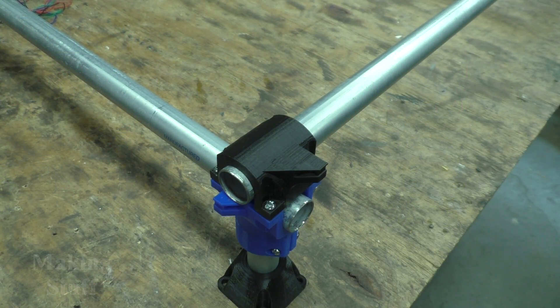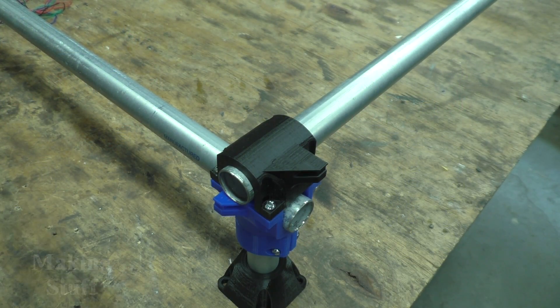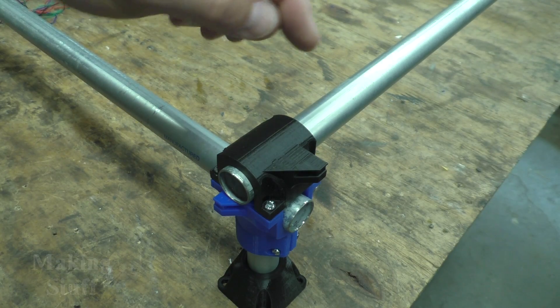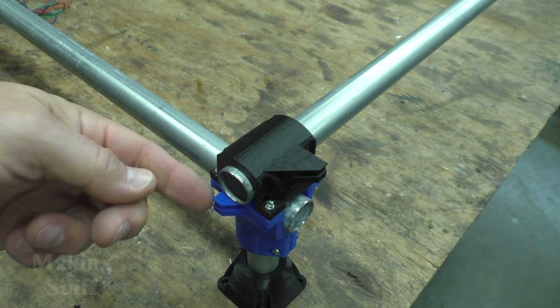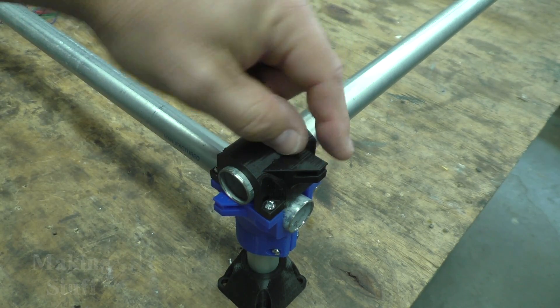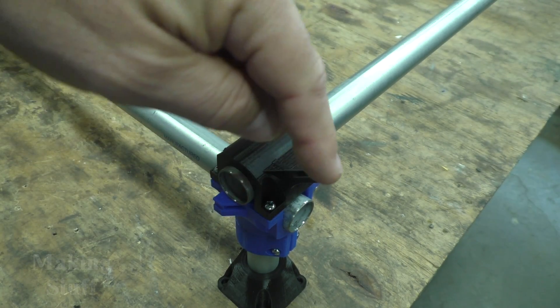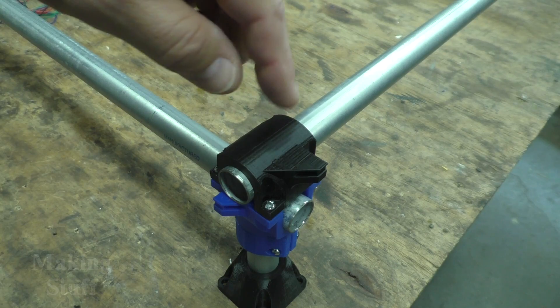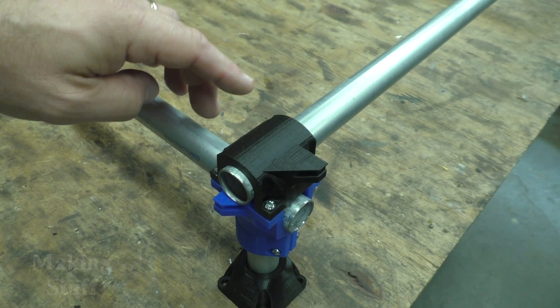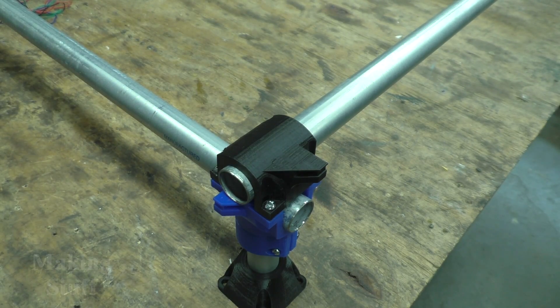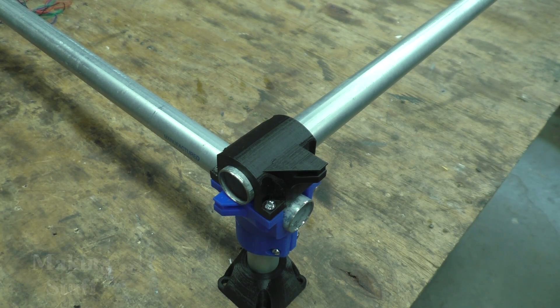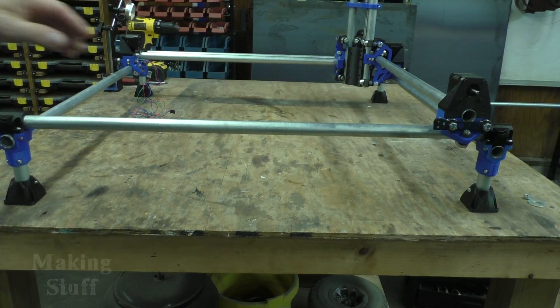I'm going to start out by fixing a mistake I made in the last video. These flat pieces on the corners need to be facing outwards and I've got them facing inwards. So I'm going to rotate those around, but to do that I've got to take all these rails off and that's also a good time to fix another problem which is the rigidity of the frame.